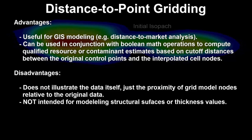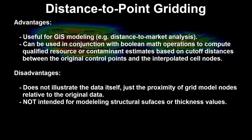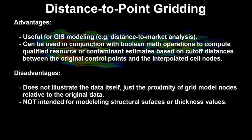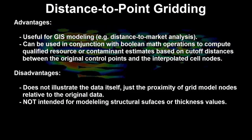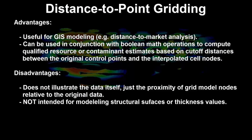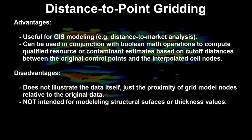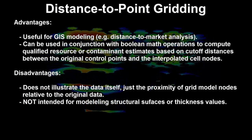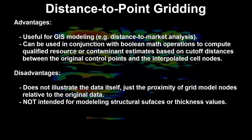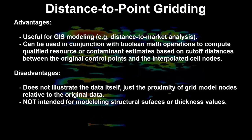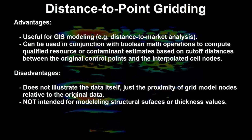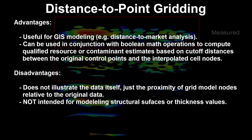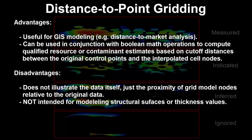Advantages: distance to point gridding is useful for GIS modeling such as performing distance to market analyses, and more importantly can be used with Boolean math operations to compute qualified resource or contaminant estimates based on cutoff distances between the original control points and the interpolated cell nodes. Disadvantages: distance to point gridding does not illustrate the data itself — just the proximity of grid modeled nodes relative to the original data — and it is not intended for modeling structural surfaces or isopacks.